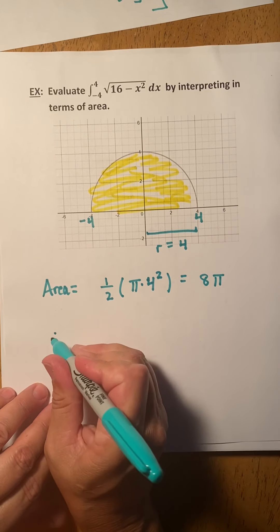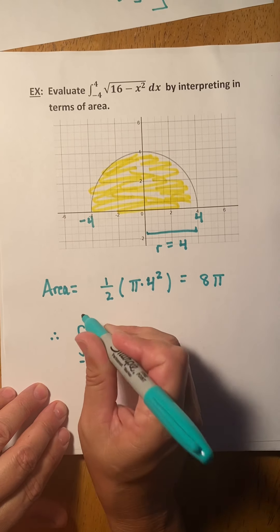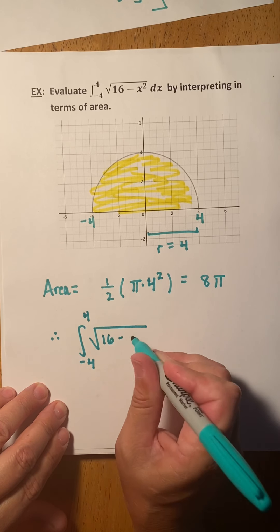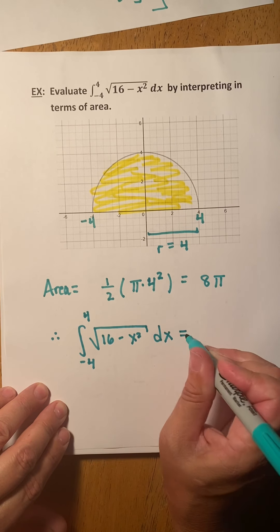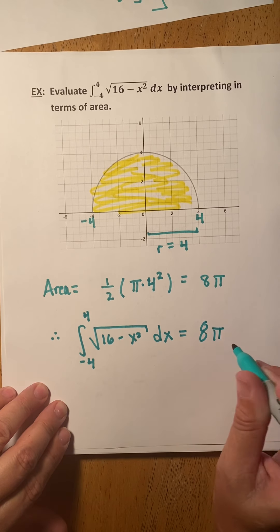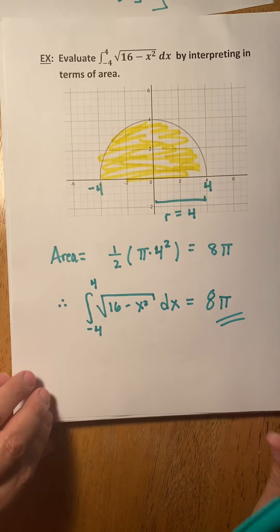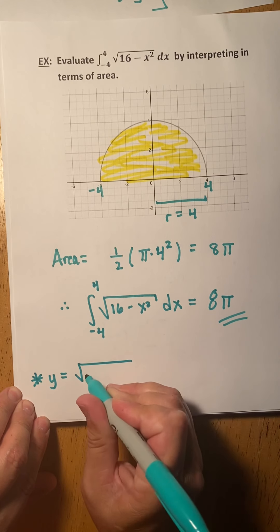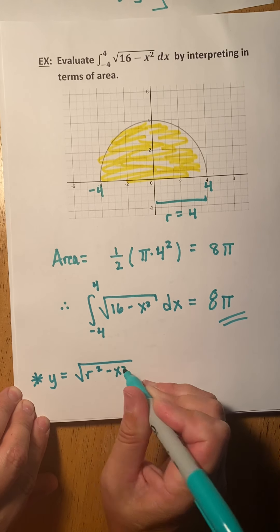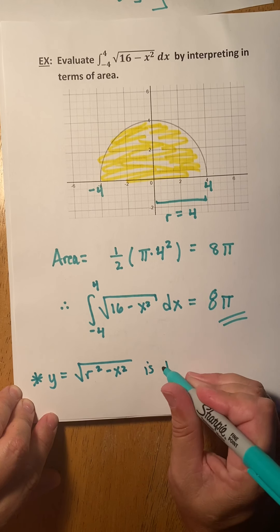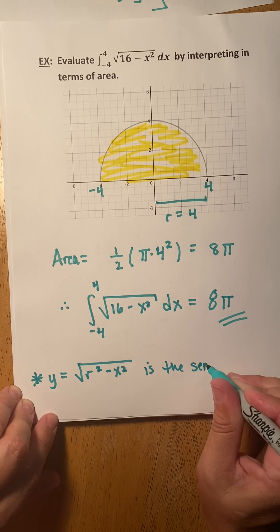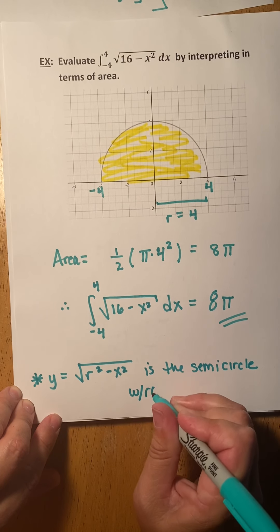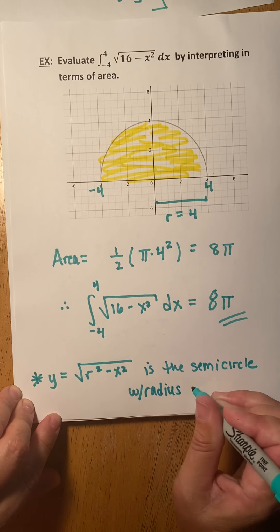Therefore, the integral from negative 4 to 4 of the square root of 16 minus x squared dx is equal to 8 pi. In general, y equals the square root of r squared minus x squared is a semicircle with radius r.